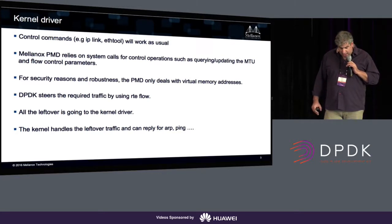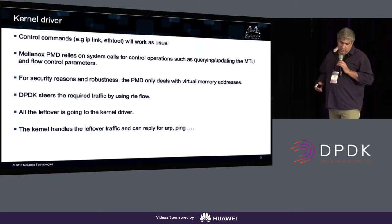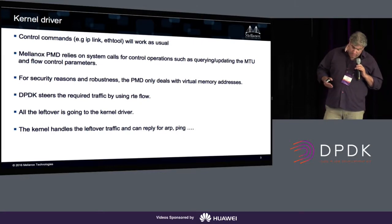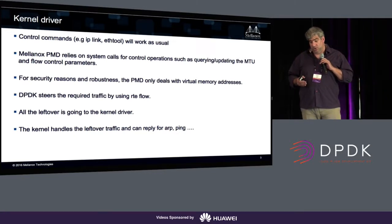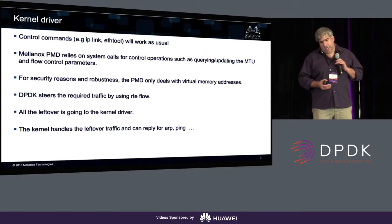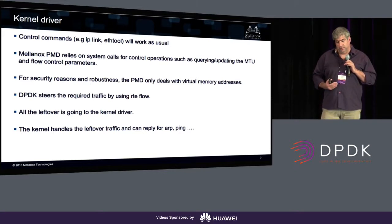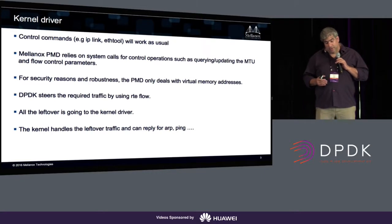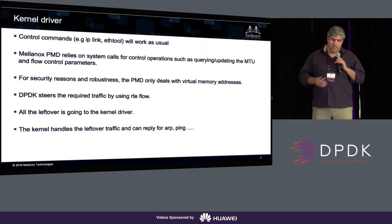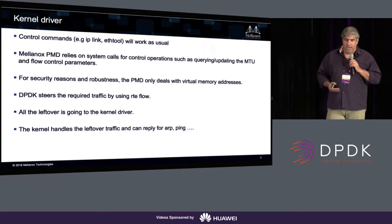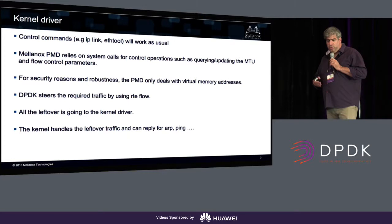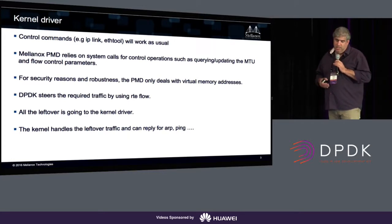DPDK can steer traffic to queues using RTE flow. All the leftover traffic — which usually goes nowhere in other PMDs — in Mellanox it continues to go to the kernel. So if a DPDK application did not claim traffic like pings and ARPs, the kernel will continue to process them and handle the job, and we don't need to write the application to do that.